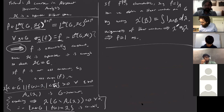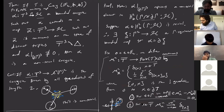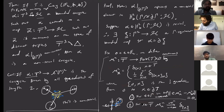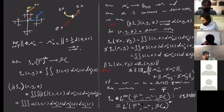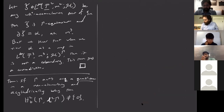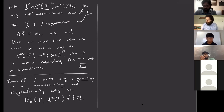Everything in the proof goes exactly the same, except in this theorem we should say not that the cosec was non-zero, but that the cosec was non-constant. With this, in particular, it shows that for free groups they satisfy this condition that they have non-trivial bounded 2-homology.